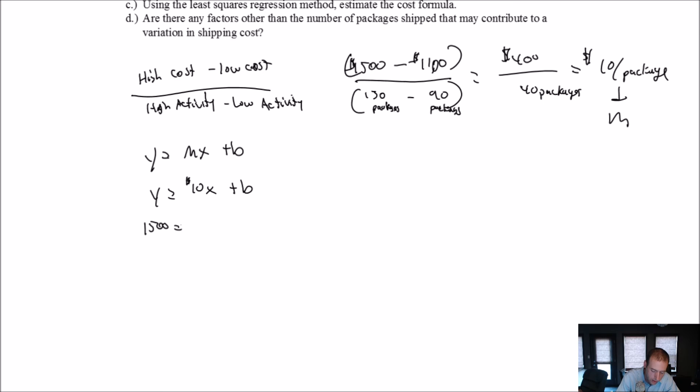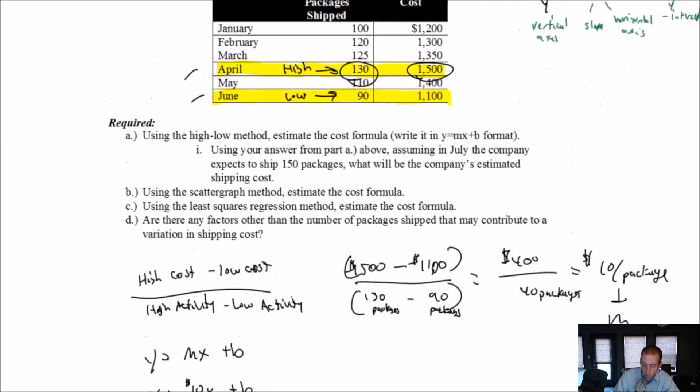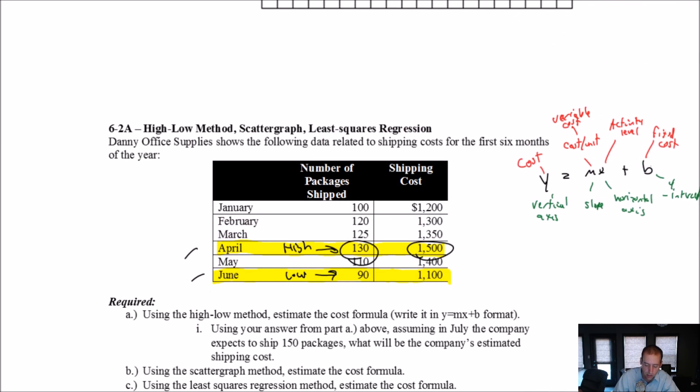10X, what was X? It was 130 plus B. So $1,500 equals 130 times 10 plus B. $1,500 equals $1,300 plus B. Change this one over to that side. So we're going to subtract it. So it's $200 equals B. So my B, and remember what B is, B is my fixed cost is $200.